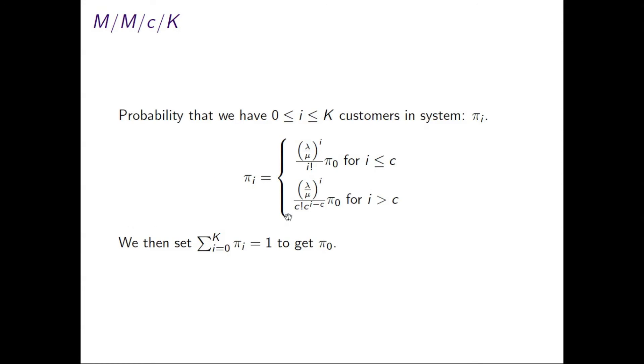With a little bit of work, you can solve the Markov chain to get the probability pi i of having i customers in the system. And if you look carefully, this pi i is defined as a function of pi nought. Then you can simply normalize your pi i's by solving the fact that your probabilities have to sum to one to get pi nought.